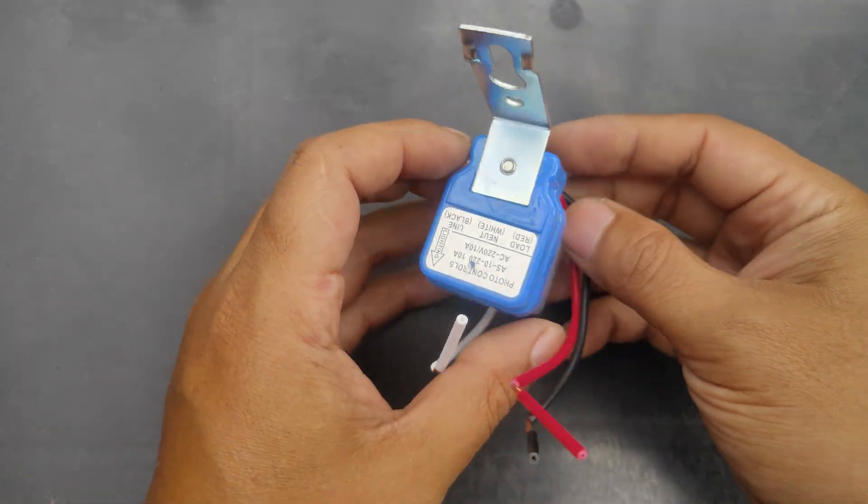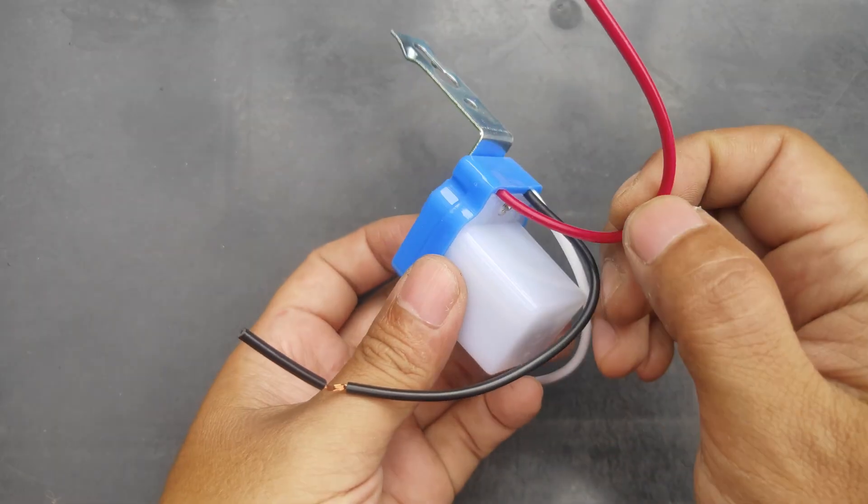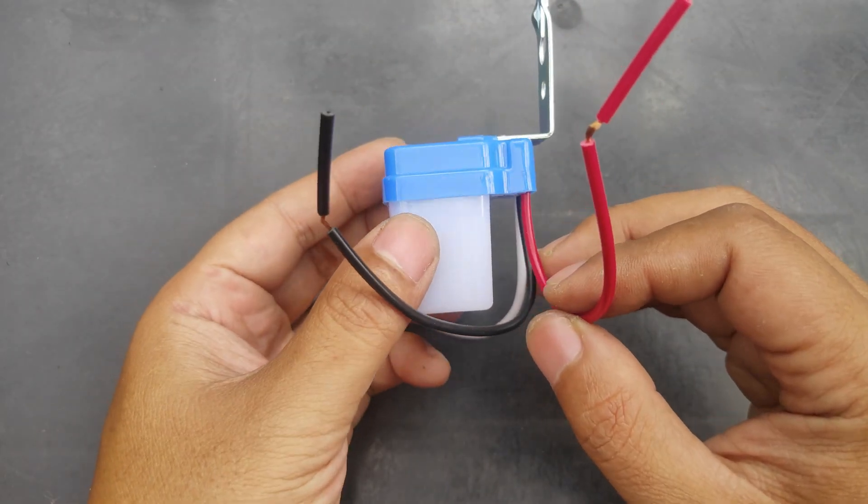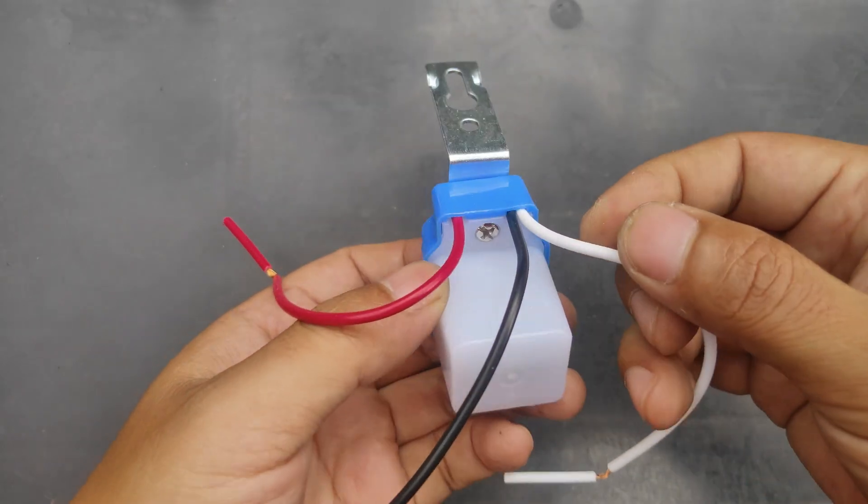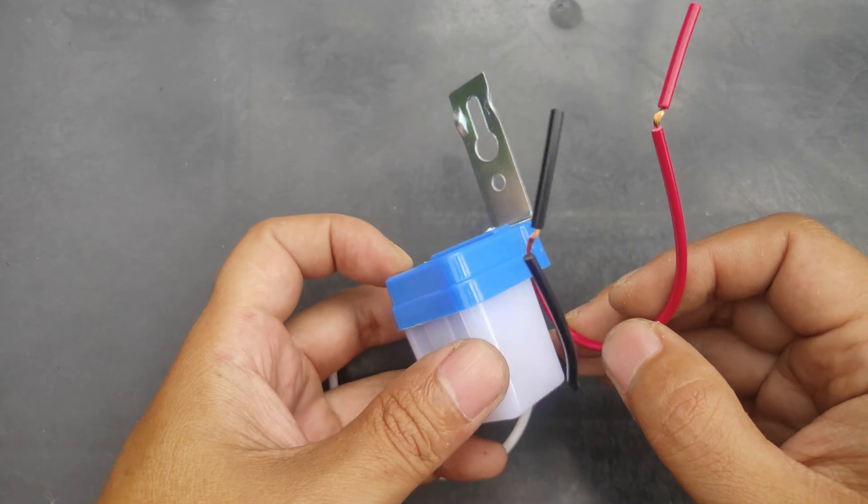This photocell sensor works on 220 volts AC and has three wires. Red is for the load, which connects to the lamp. Black is for the line, connects to power source, and white is for the neutral, connects to both lamp and power source.